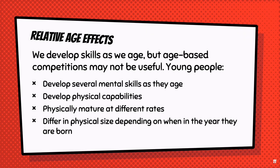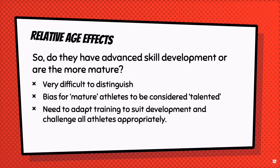Relative age effects are particularly tricky to navigate. Each individual develops at their own rate, and we know that mental skills, physical capabilities, size, and maturation occur at different stages. But despite all these things happening at slightly different ages, many sporting competitions are still based on age. This makes it incredibly difficult to answer one crucial question: does an athlete have advanced skill development, or are they just more mature? In talent identification, this makes selecting cricketers difficult because so many cricket skills benefit from being physically mature.